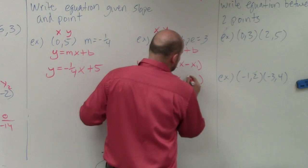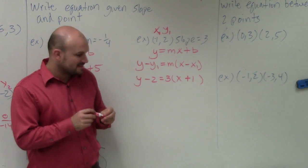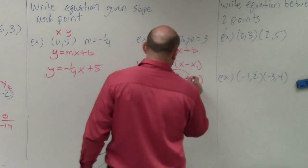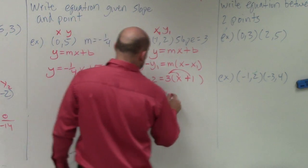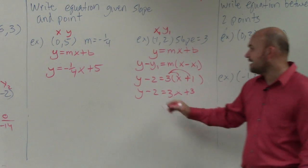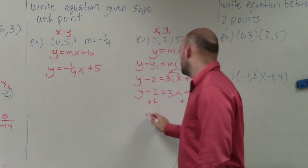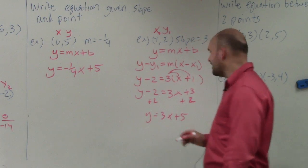So if you want to change it to x plus 1 in your brain and do that, that's perfectly fine. Now, we just need to simplify. So we apply a distributed property. y minus 2 equals 3x plus 3. And then we just solve for y by itself. Add 2, add 2. So y equals 3x plus 5.